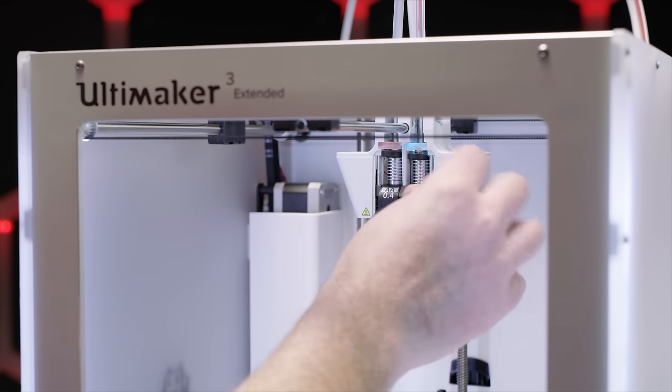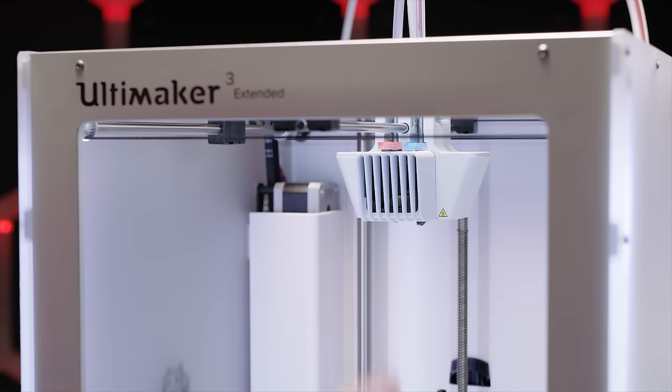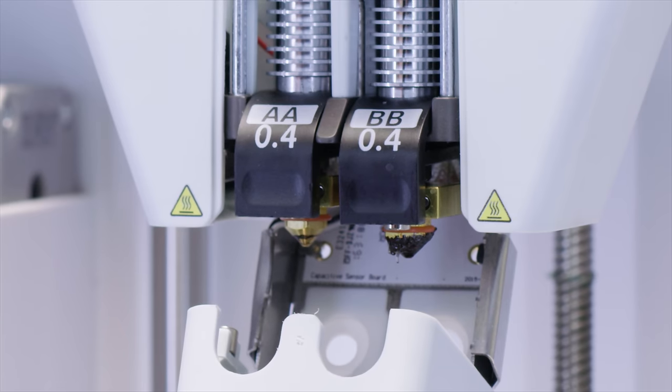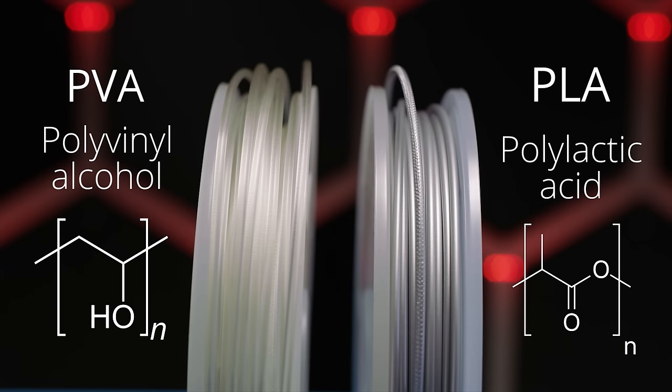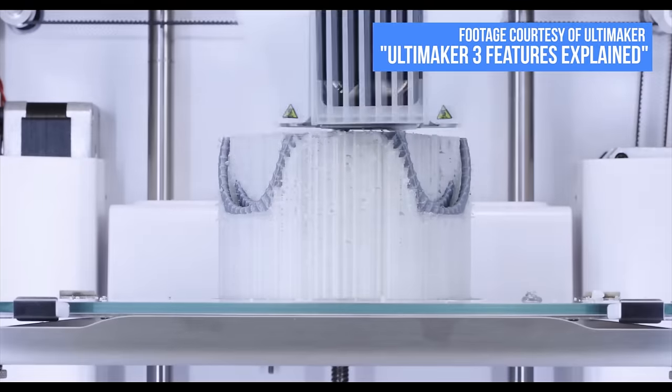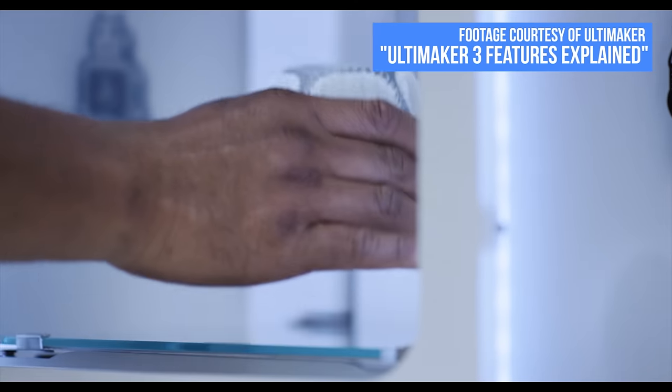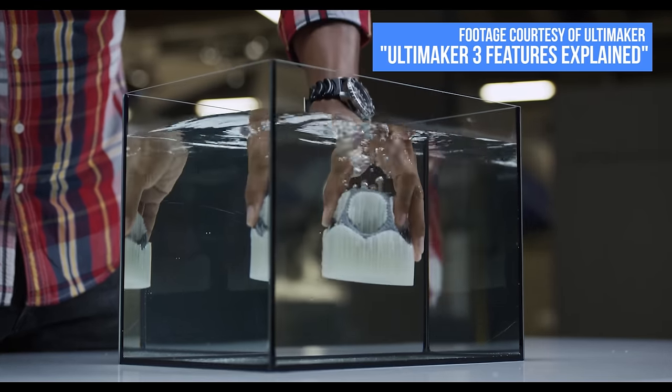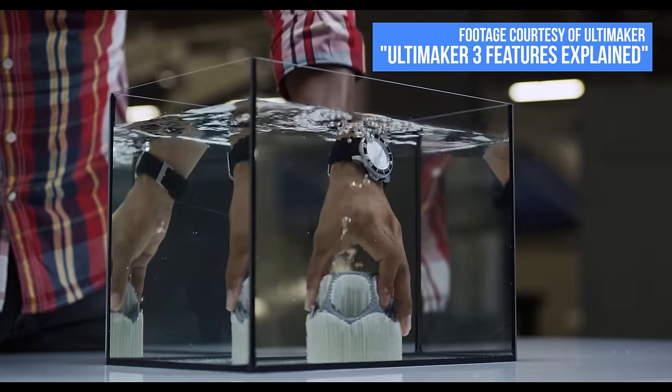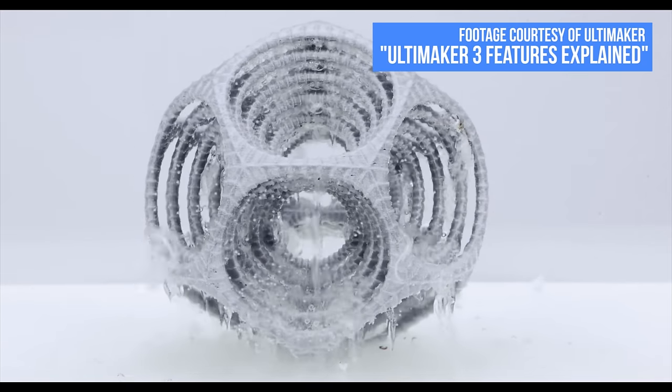Then you can hot swap Printcore BB into the other side of the dual extruder. It has custom nozzle geometry optimized for support materials. In this case, PVA. PVA stands for polyvinyl alcohol. It's a water soluble support material that works perfectly alongside dual extrusion printers to help create complex models, models with large overhangs or even models with deep internal cavities.